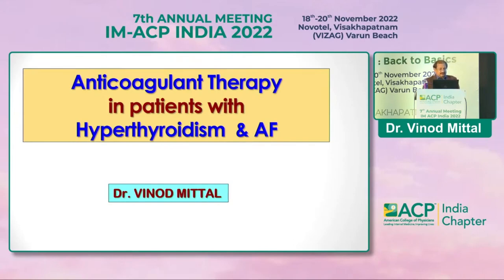My main emphasis is hyperthyroidism and atrial fibrillation, which are very commonly co-existing conditions. The key questions are: do we treat AF first or hyperthyroidism first, or both simultaneously? And in which conditions do we start anticoagulants?